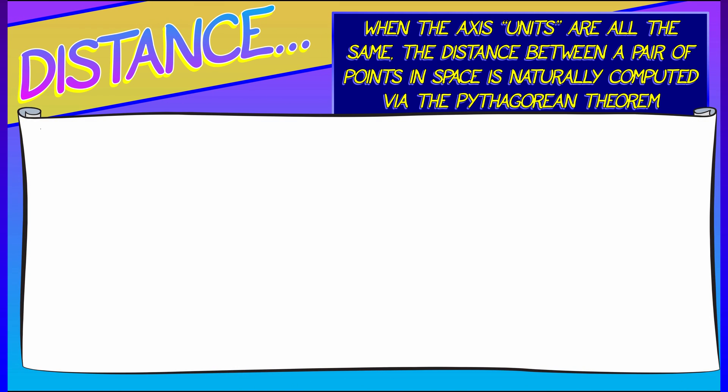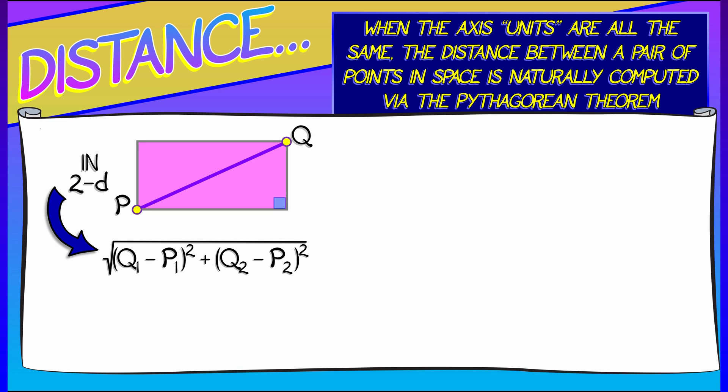So, perhaps you recall how to compute the distance between points using the Pythagorean theorem. In 2D, it's really simple. Let's say we have a point P and a point Q with coordinates P1, P2, and Q1, Q2. I'm going to use those instead of X and Y coordinates. Then, the distance between those points in the plane is the square root of the sum of the differences in squares between the first coordinates and the second coordinates.